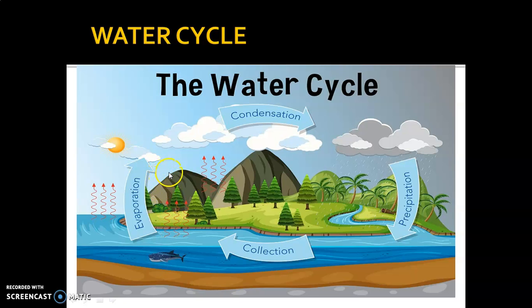When the water vapor reaches a maximum height, it gets condensed around dust particles — that is how condensation takes place. When clouds become heavy and are not able to hold more moisture, the water falls on the earth's surface, and that is called precipitation. Transpiration means when water evaporates from the leaves of plants. Transpiration also helps in the formation of clouds.